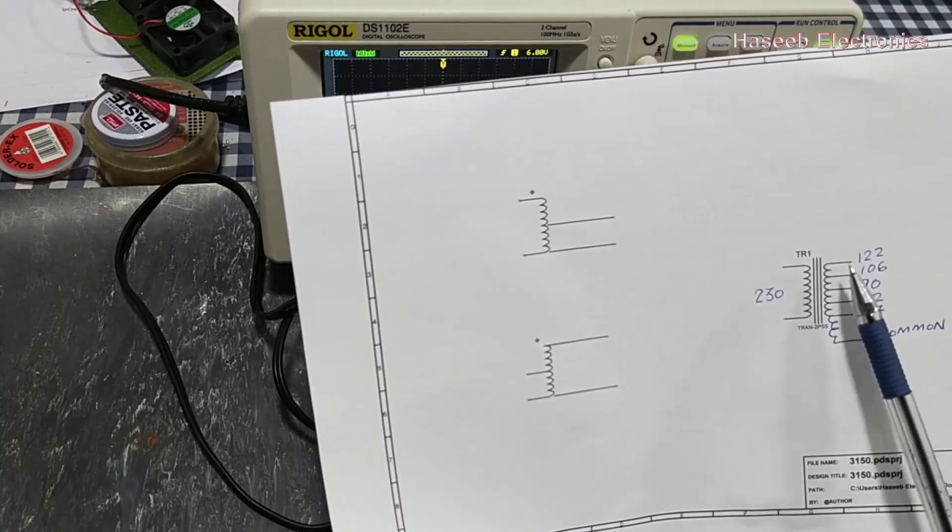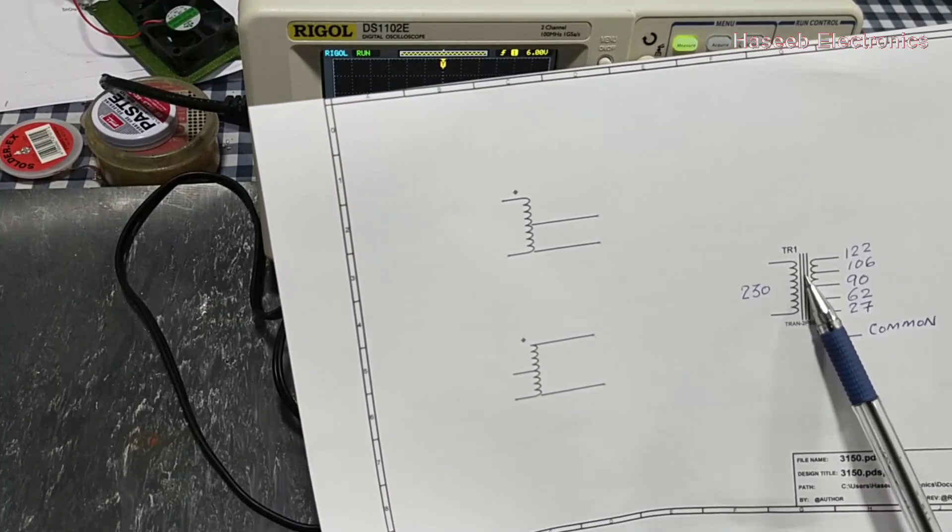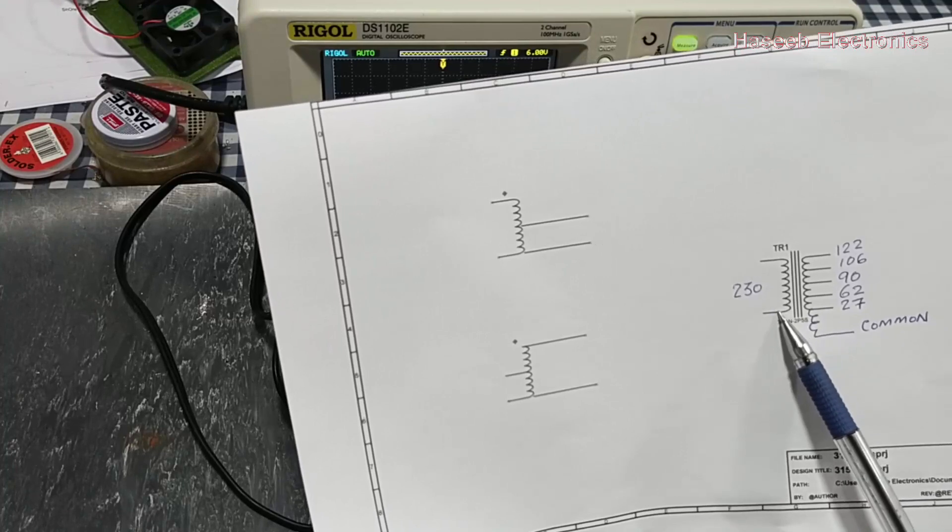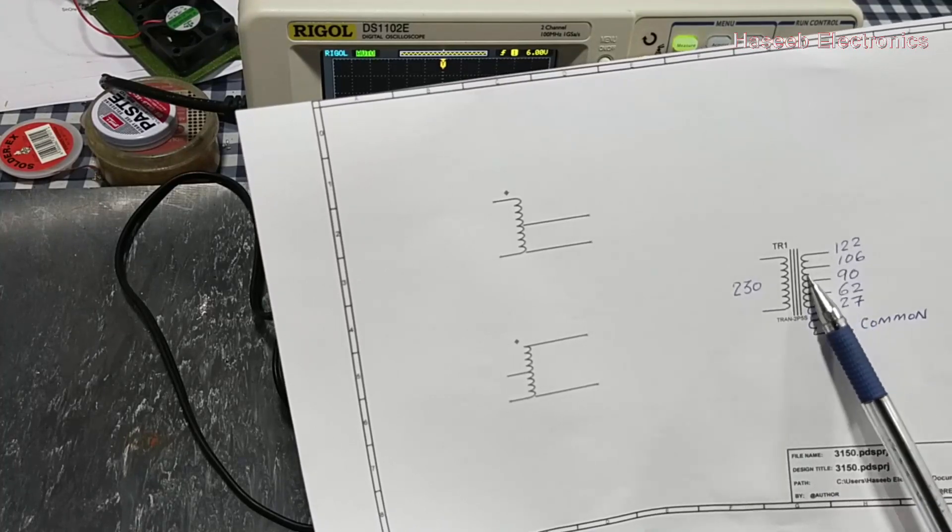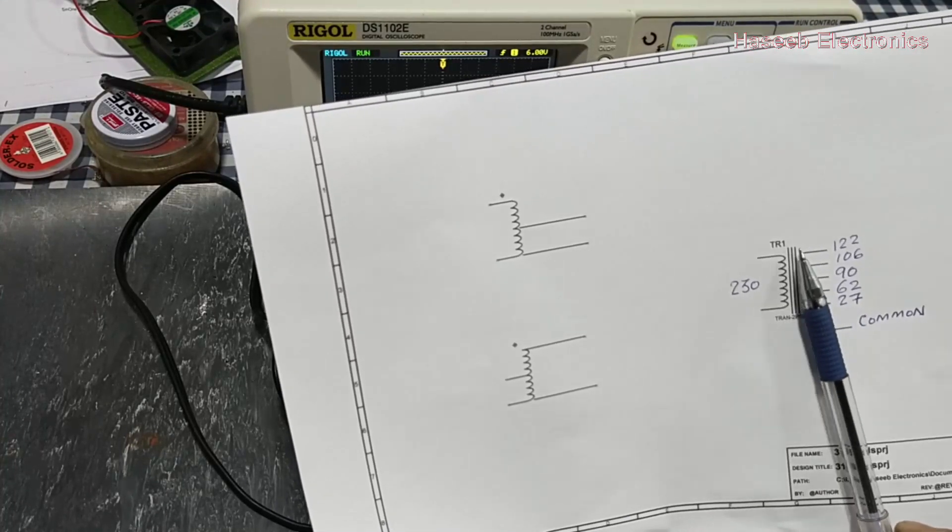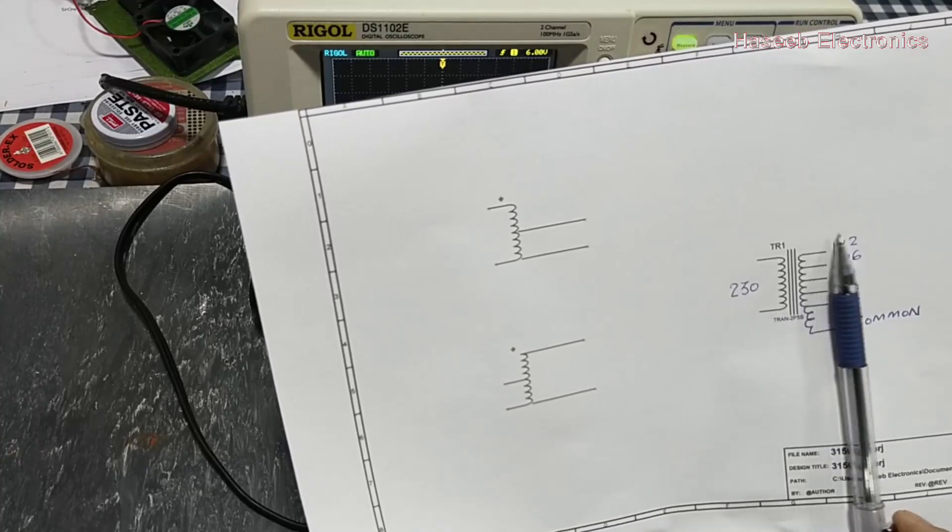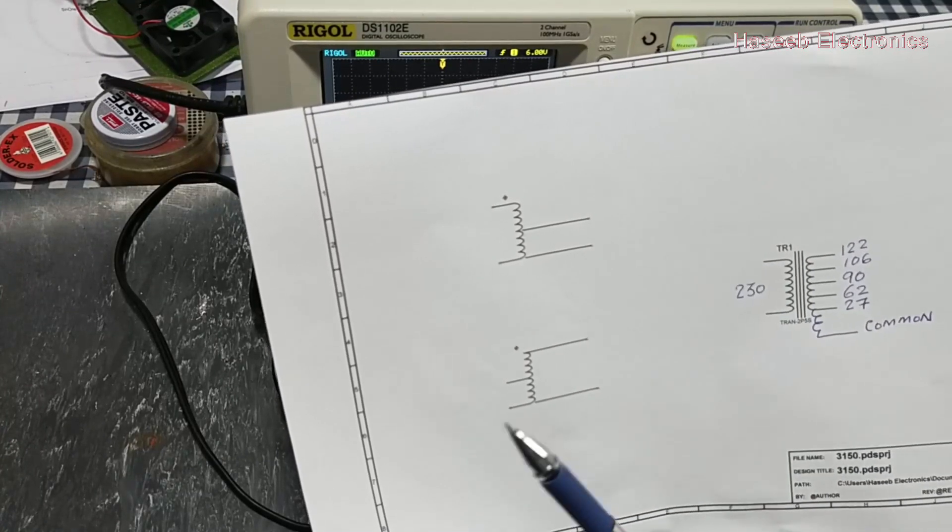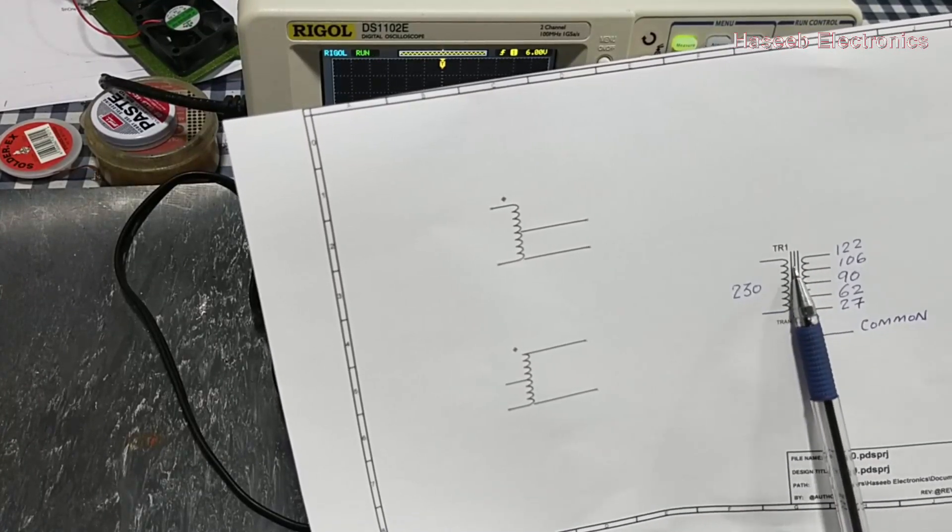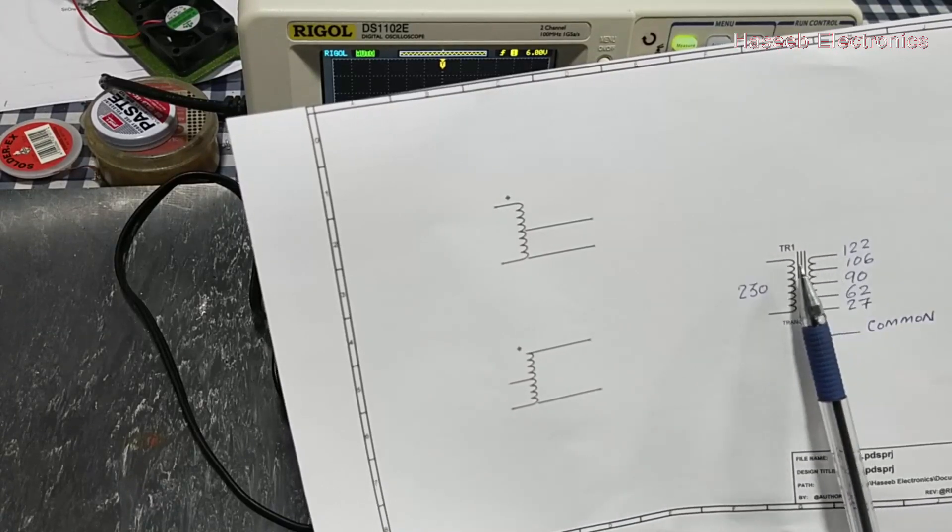Here line and neutral are making their own circuit, and the next circuit is totally isolated, separated from the primary. So it is transferring voltage on magnetic field.